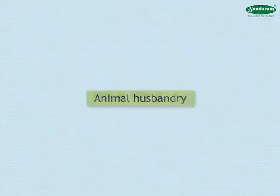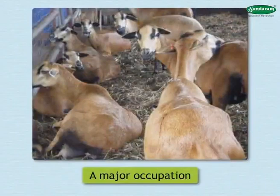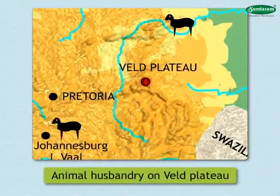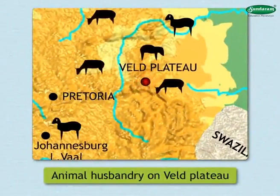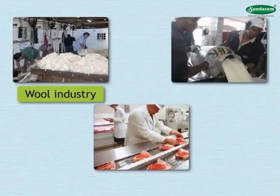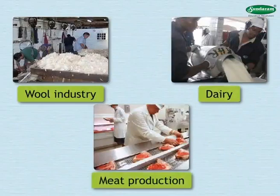Animal husbandry is a major occupation of this country. Rearing of sheep and goats, pigs, and cattle is carried on in the vast grassland region on the Veld Plateau. Industries based on animal husbandry that have developed in this region include the wool industry, dairy, and meat production.